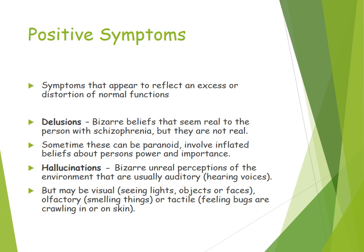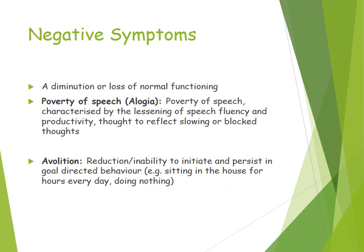Negative symptoms are a diminution or loss of normal function — things you would expect to be present but are not. For example, poverty of speech is characterized by a lessening of speech fluency and productivity, thought to reflect slowing or blocked thoughts. You'd expect a person without schizophrenia to talk fluently, but a person with schizophrenia isn't able to have that thought process. Avolition is a reduction or inability to initiate goal-directed behavior; they might sit in their house for hours doing nothing, unable to start or work towards a goal.